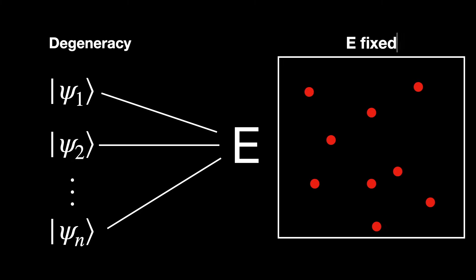Which means that a system, like an electron in an atom, for example, can exist in different configurations while still having the same total energy.